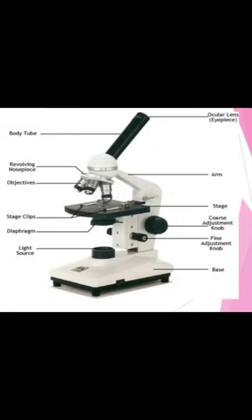The first part of the compound microscope is the eyepiece — the focal point the viewer looks through to see the specimen. The next part of the compound microscope is the body tube, where the rays of light are bent so that the object being viewed is enlarged by the scope.